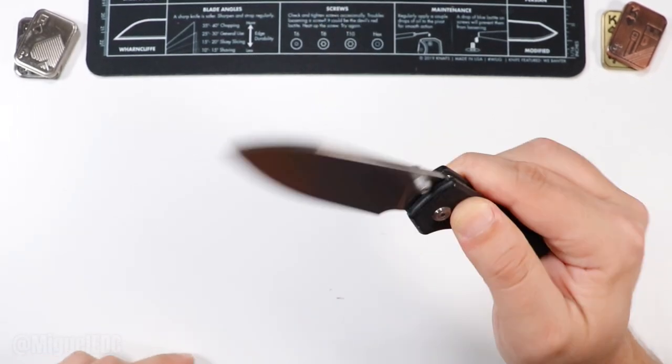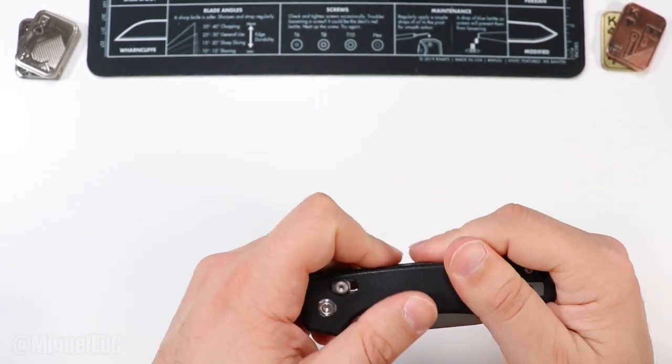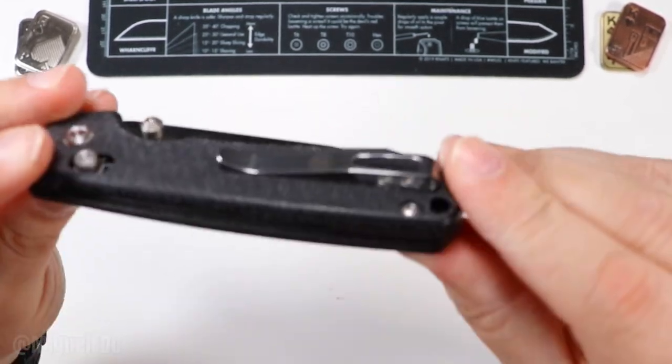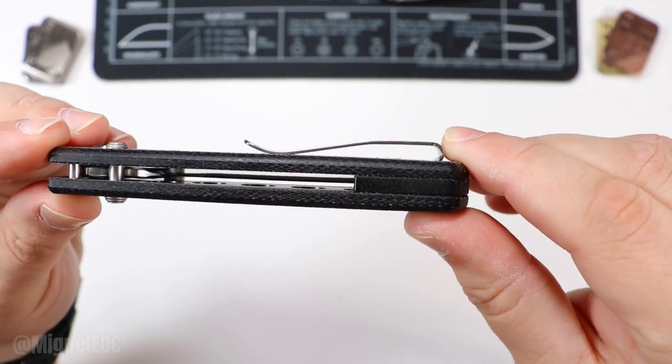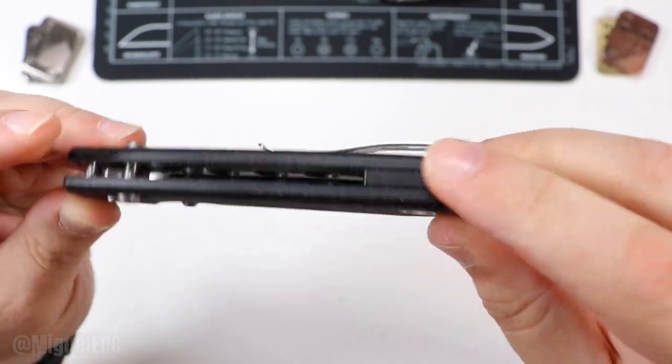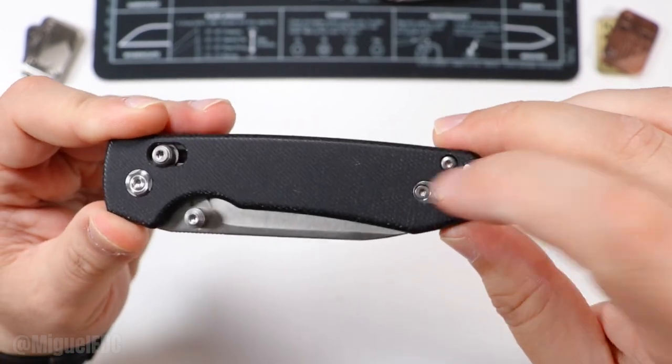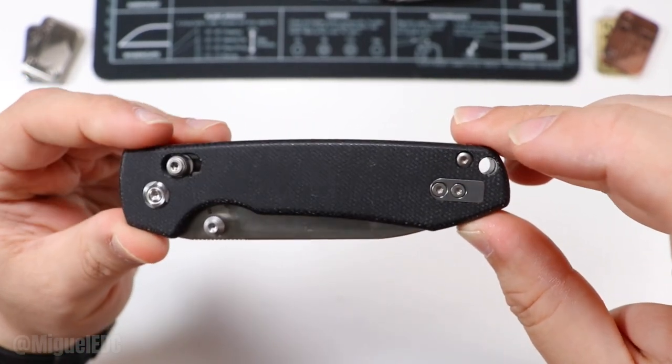We have the Micarta. They've done the Micarta right because it's light but also grippy. Reversible pocket clip. This is nice. Nice and recessed pocket clip. The screws are recessed as well.